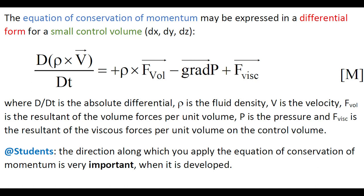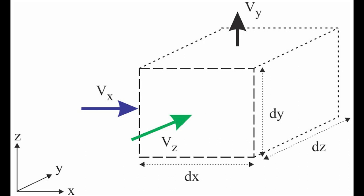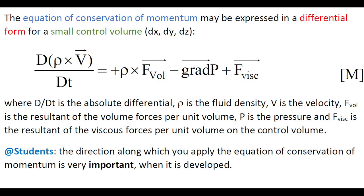The equation of conservation of momentum may be expressed in differential form by applying it to a small control volume of dimension dx dy dz. This gives the expression where rho is the fluid density, v the velocity, f_volume is the resultant of the volume force per unit volume, p the pressure, and the viscous force is the resultant of the viscous force per unit volume.